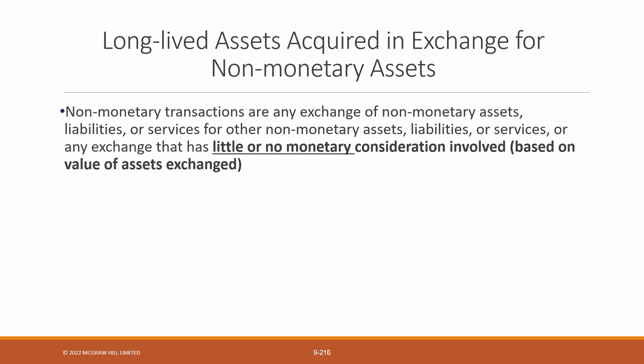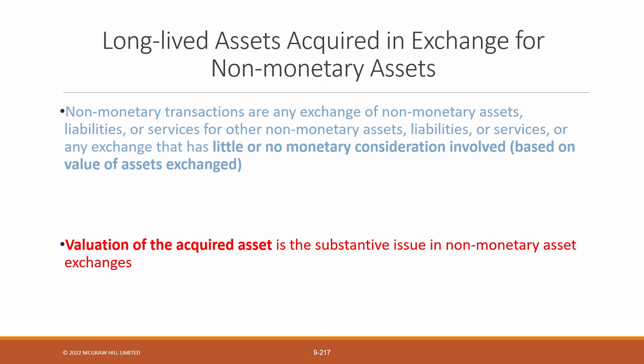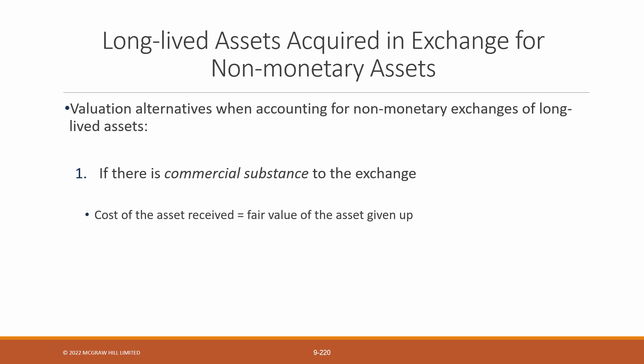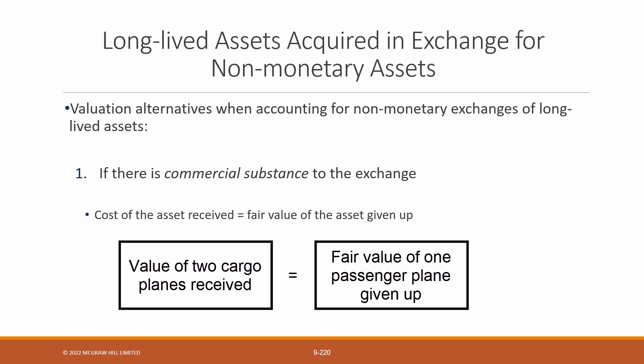Now that we understand what non-monetary assets are, the main issue is how to account for the value of the assets which are received in the exchange. Going back to our example, if one entity gives up a passenger plane for two cargo planes, how should the cargo planes that we received be valued and recorded? There are two valuation alternatives when accounting for a non-monetary exchange of property, plant and equipment. If there is commercial substance in the exchange, then the cost of the asset received is equal to the fair value of the asset given up. So if we're the entity giving up the one passenger plane in exchange for the two cargo planes, then the fair value of the one passenger plane is the value we would use to record the two cargo planes.